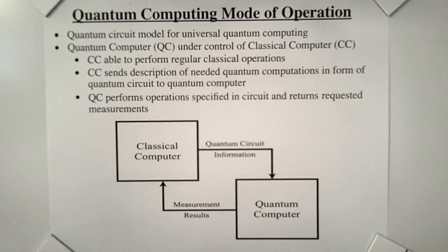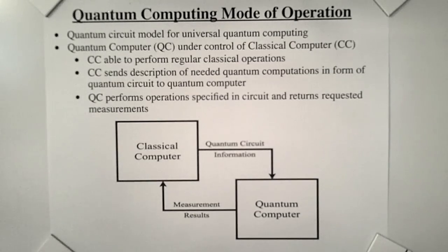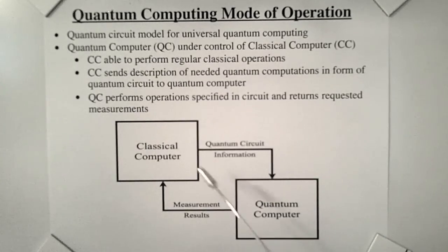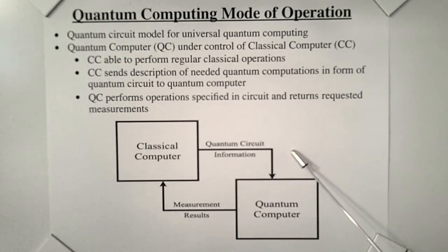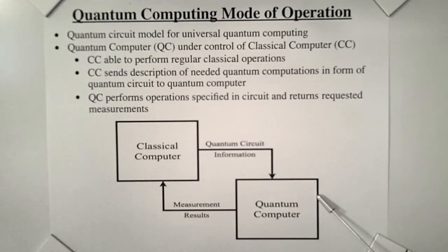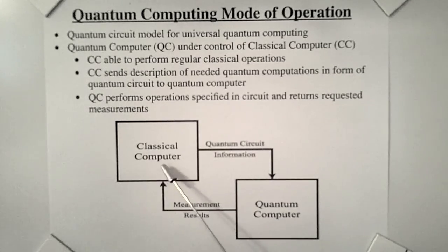When universal quantum computers become available, they will likely work in conjunction with classical computers. The quantum computer works together with, but under the control of, the classical computer. The classical computer can send a description of needed quantum computations in the form of a quantum circuit to the quantum computer. The quantum computer performs the operations specified in the circuit and returns requested measurements to the classical computer.